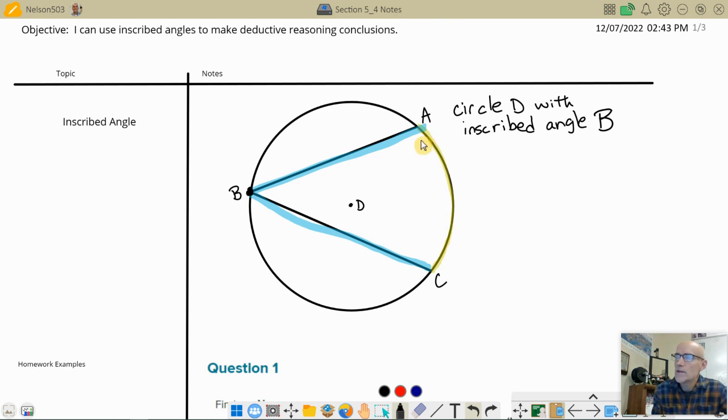What we discovered yesterday in that activity is that this arc is twice as big as whatever this angle is. I'm going to do an example here. Like if this angle was 40 degrees, this arc over here is 80 degrees. If the angle was 60 degrees, then the arc is 120 degrees.